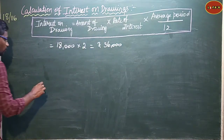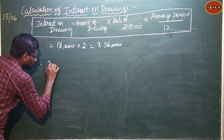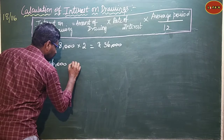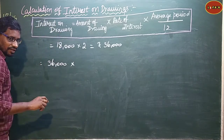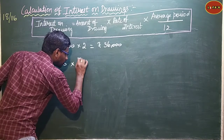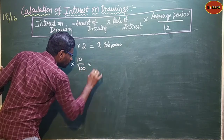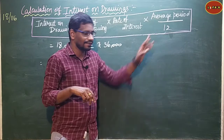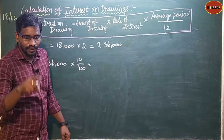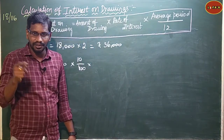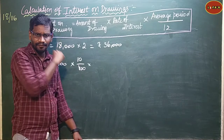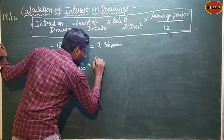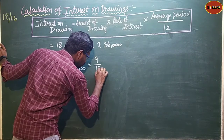Now calculate interest on drawings: 36,000 into 10 by 100 into average period. From the tabular column, for half year beginning, the average period is 9 months. So we use 9 by 12.